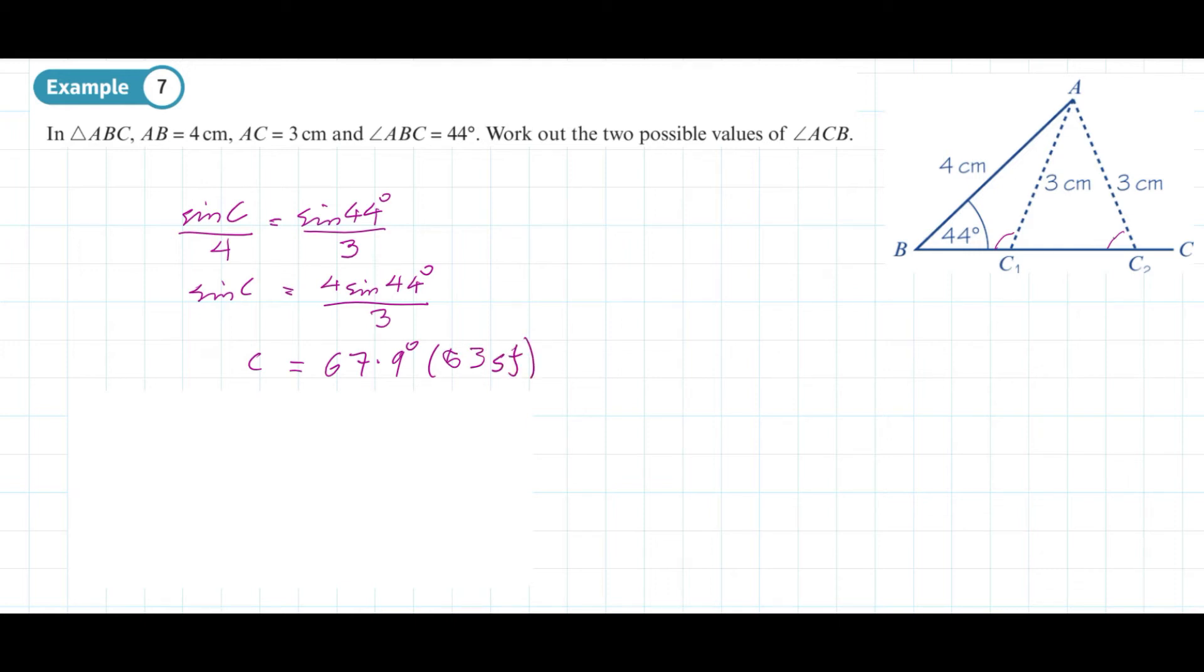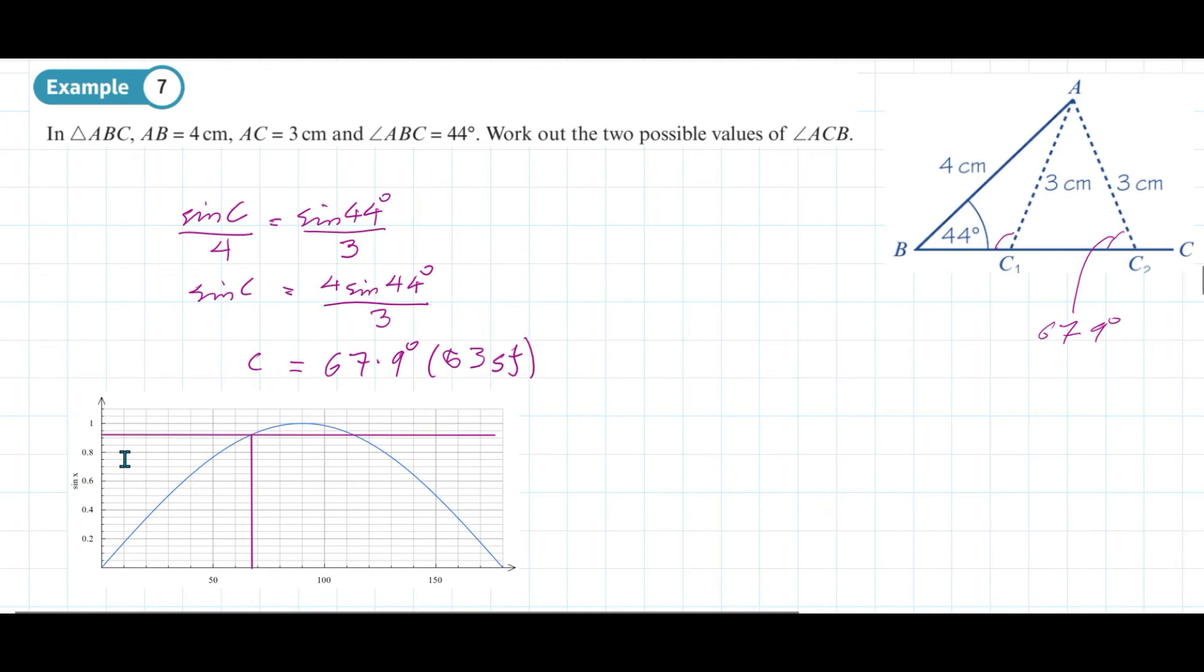So we've effectively worked out this angle here as being 67.9 degrees. We've got to now use a little bit of logic to work out the alternative c1, the obtuse angle. If we put on a graph of the sine function, 4 sine 44 divided by 3 comes out as about 0.92. Here's our sine curve between 0 and 180 degrees with a line drawn across at 0.92, and here's our first solution at 67.9 degrees.